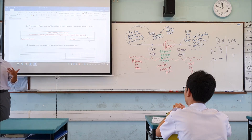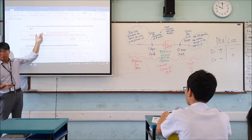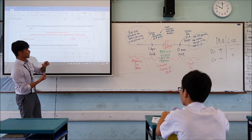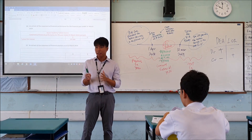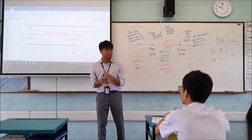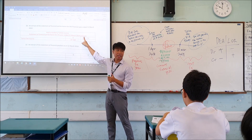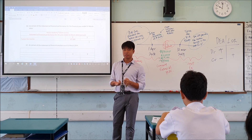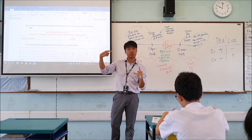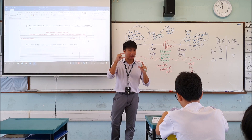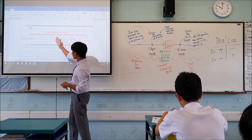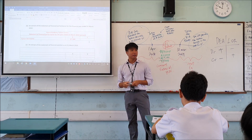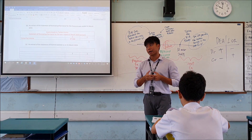For the statement of financial performance for the year ended 31st March 2019 — this is only a part of the statement, so write the word 'extract'. Your tuition fee income is $7,500 because this is the amount you closed to the income summary.